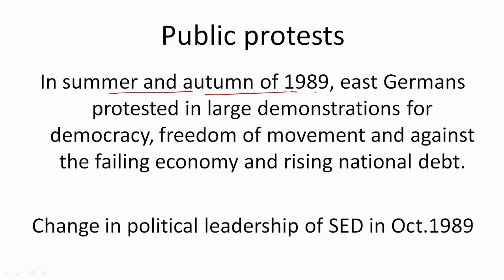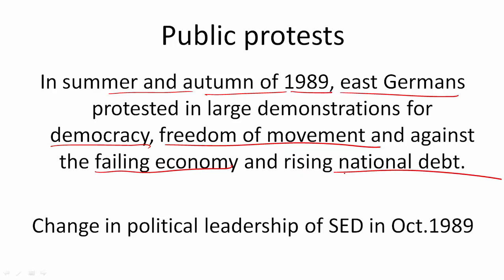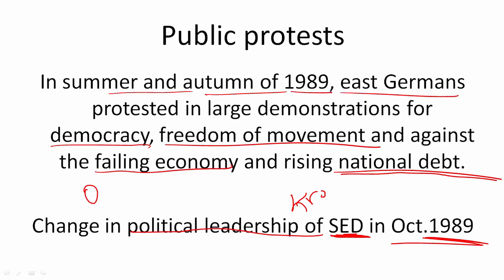In the summer and autumn of 1989, there was also a wave of protest inside East Germany — people protesting in large numbers for democracy, free elections, and freedom of movement to go to West Germany. The economy was also failing badly, with national debt rising to a dangerous level. Due to these protests, in October 1989 there was a change in political leadership — the old leader of the SED, the communist party of East Germany, gave way to a new leader called Krenz, but even he could do nothing.